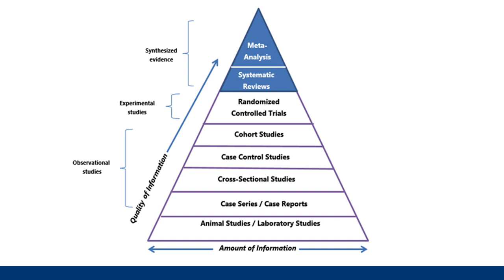When we search for evidence, some study types are generally considered higher quality than others. The evidence pyramid is a useful visualization of this. The studies are listed with the most rigorous at the top and the least rigorous at the bottom. We're always looking for the best quality evidence available to answer the question. If we can't find something at the highest level, we keep moving down the pyramid to the next highest level until we find the evidence we need.